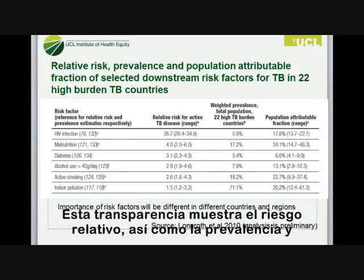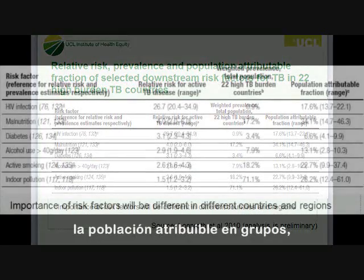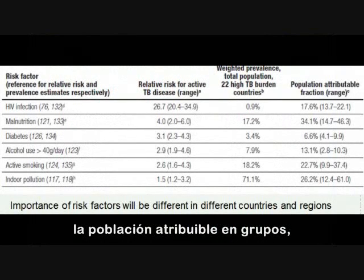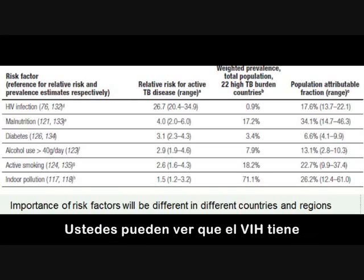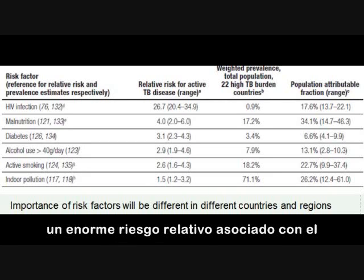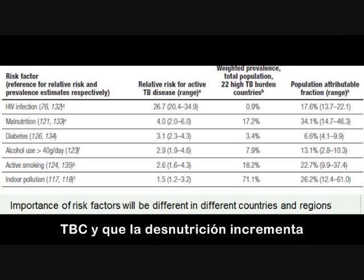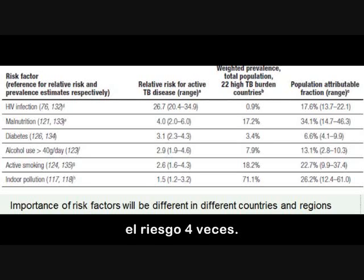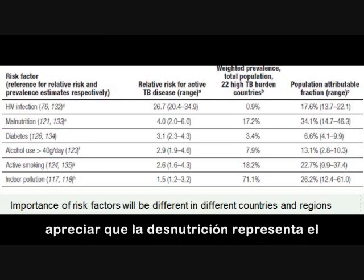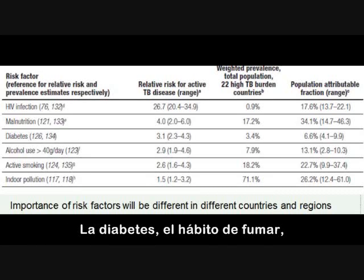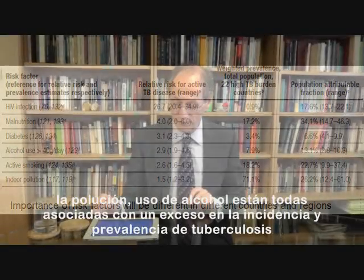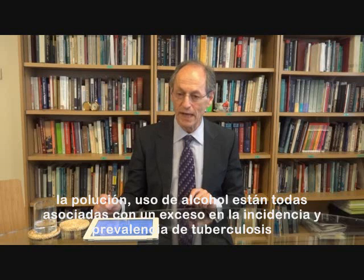These data show the relative risk, prevalence, and population attributable risk fraction of selected downstream risk factors for TB in 22 high burden countries. HIV infection has a huge relative risk associated with TB infection. Malnutrition confers a fourfold increased risk. Looking at the population attributable fraction, malnutrition is estimated to account for 34% of TB infection in these high burden countries. Diabetes, alcohol use, active smoking, and indoor pollution are all associated with excess TB incidence and account for a high proportion of tuberculosis in the population.